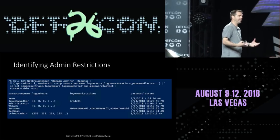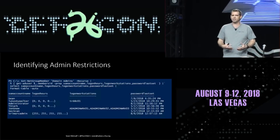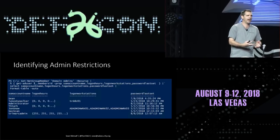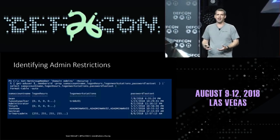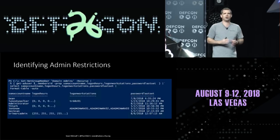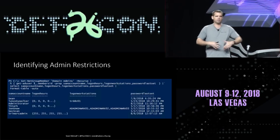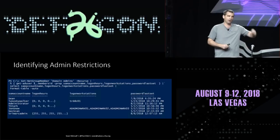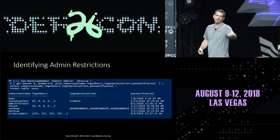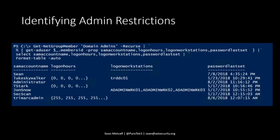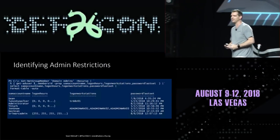Things that have been around forever that people forget about: logon hours — you can restrict when someone can log on to AD. You can also configure which workstations accounts are allowed to log on to interactively. Most pen test and red team tools don't look for this. If you pop an account but can't do anything with it, check the logon hours and logon workstation restriction attributes. Also check these on deceptive honeypot accounts — it's probably why they're locked down and why you can't do anything with them.